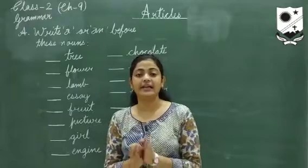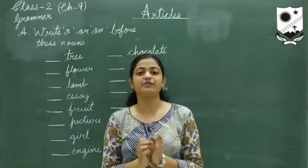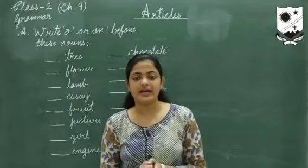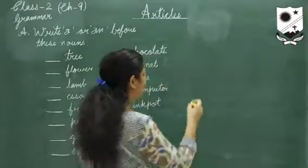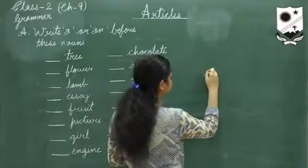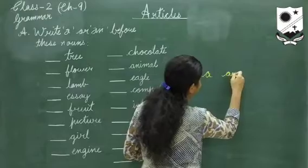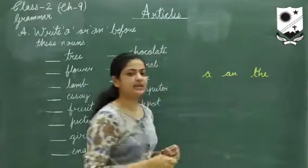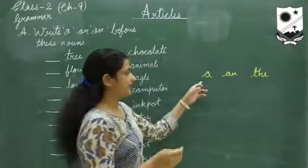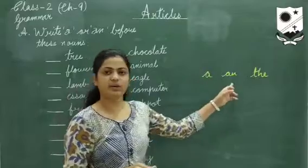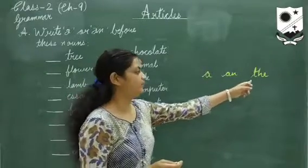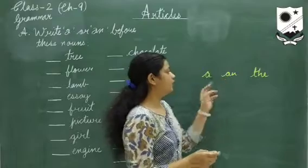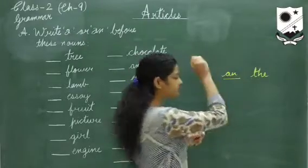Articles are a, an, and the, which we use before nouns. A, an, and the are the articles which we use before nouns. Today I'll be telling you where to use a, where to use an, and where to use the. We will start with the easiest one.